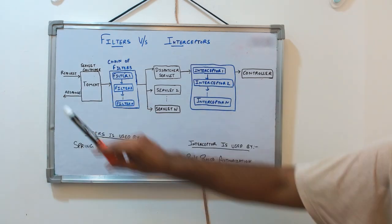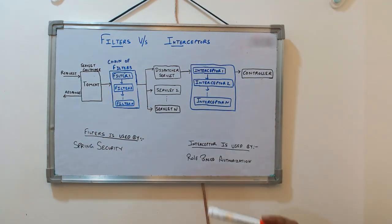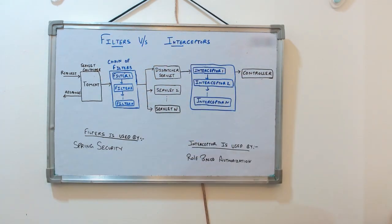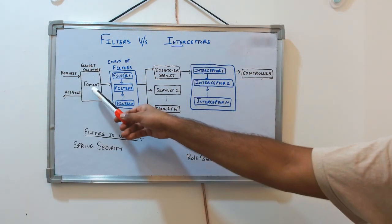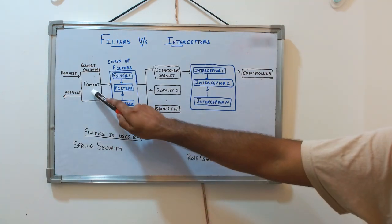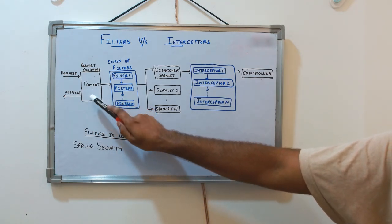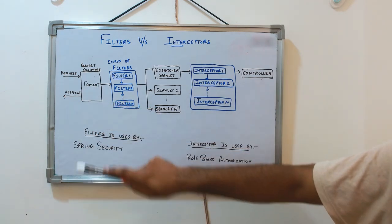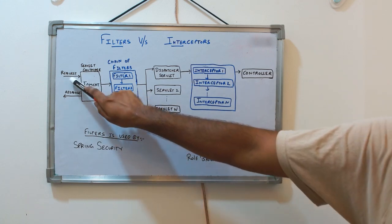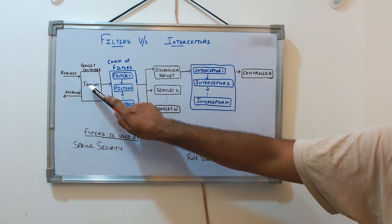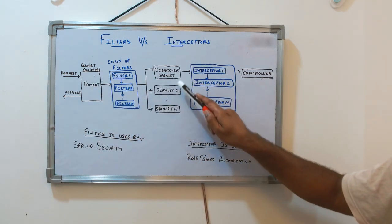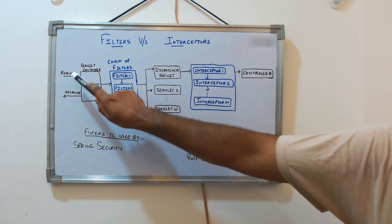When we say request and response, these are nothing but an HTTP request and HTTP response. The second is your servlet container. The servlet container is like Tomcat, where your application is actually running. It acts as your server where your application is running, and it also has the responsibility of choosing which particular servlet can handle the incoming request.